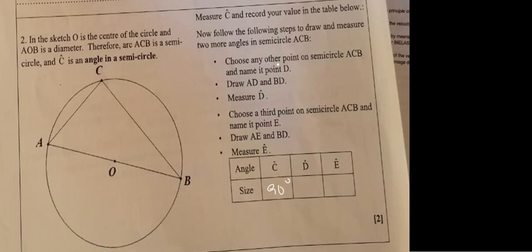Choose any other point, name it point D. Let's choose this point here. This is point D. Draw a line AD and BD. This is the line AD, this is the line BD.